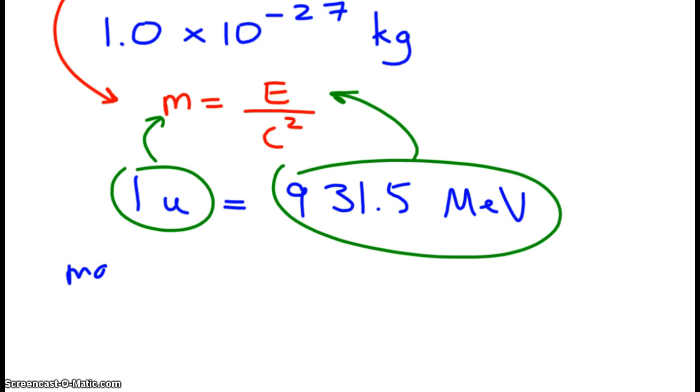We get the mass of a neutron is 1U, which equals 931.5 megaelectron volts per C squared, or times C to the negative 2.